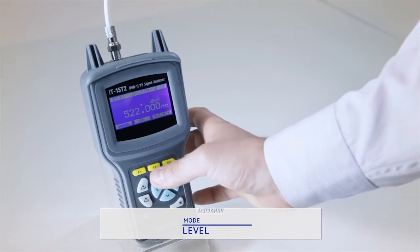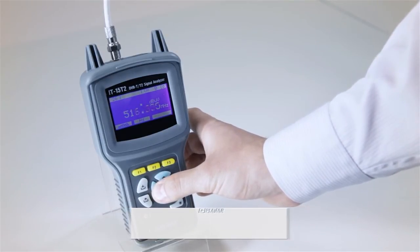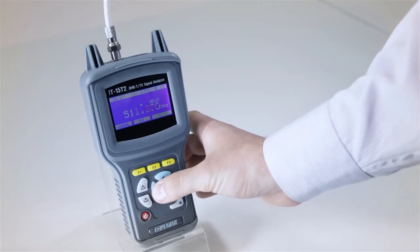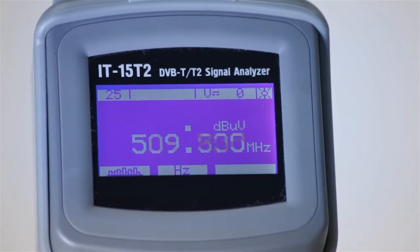Level mode will help you measure specific parameters of the channel. The instrument can perform the following measurements in this mode. For analog channels: signal level, video to audio ratio, and carrier to noise ratio.